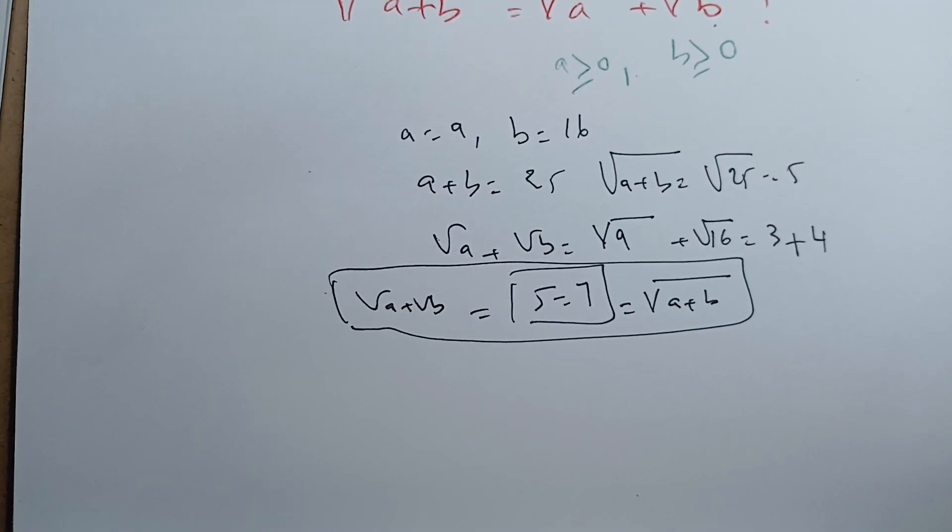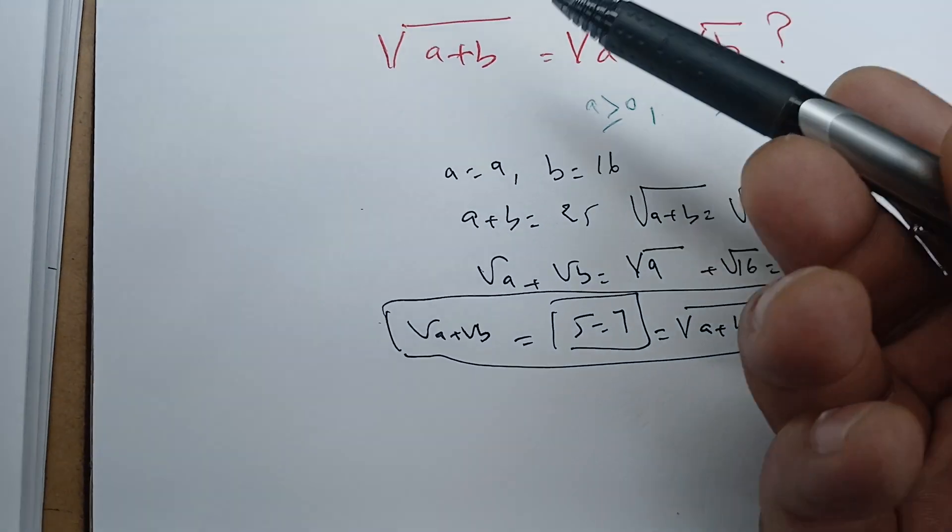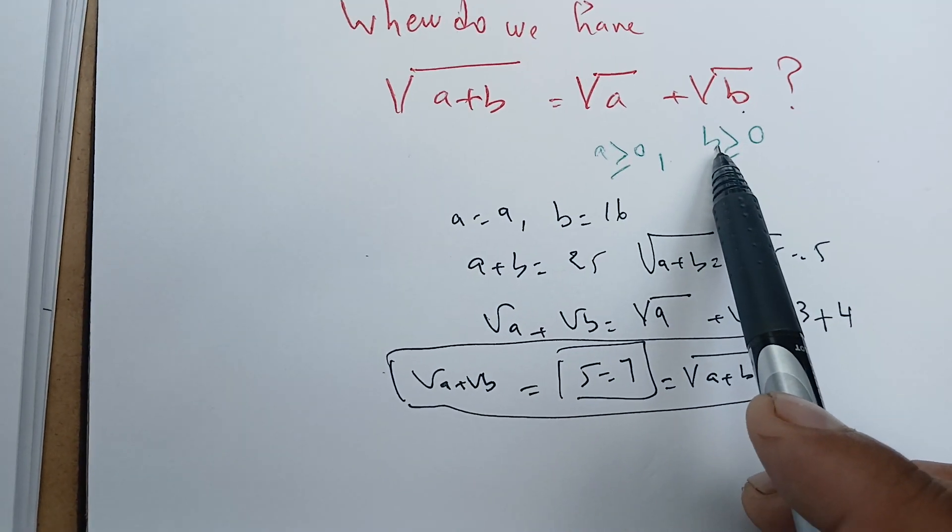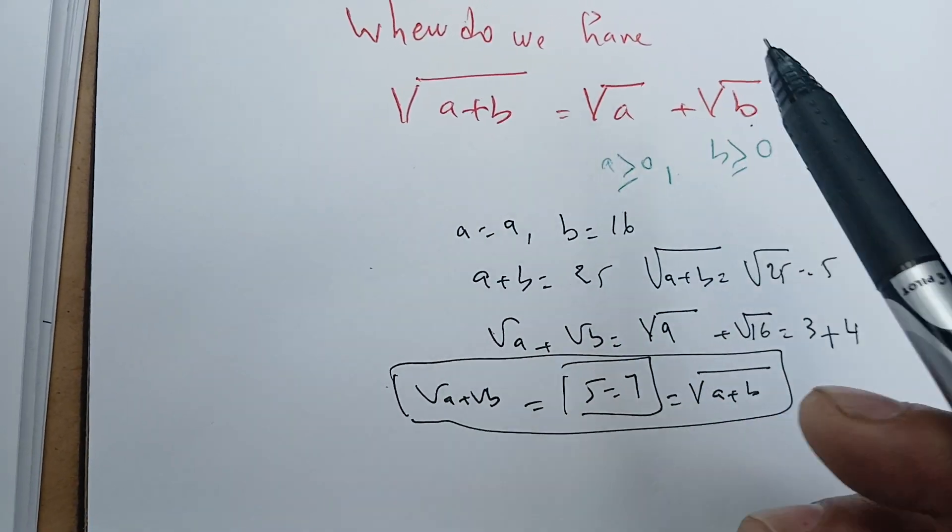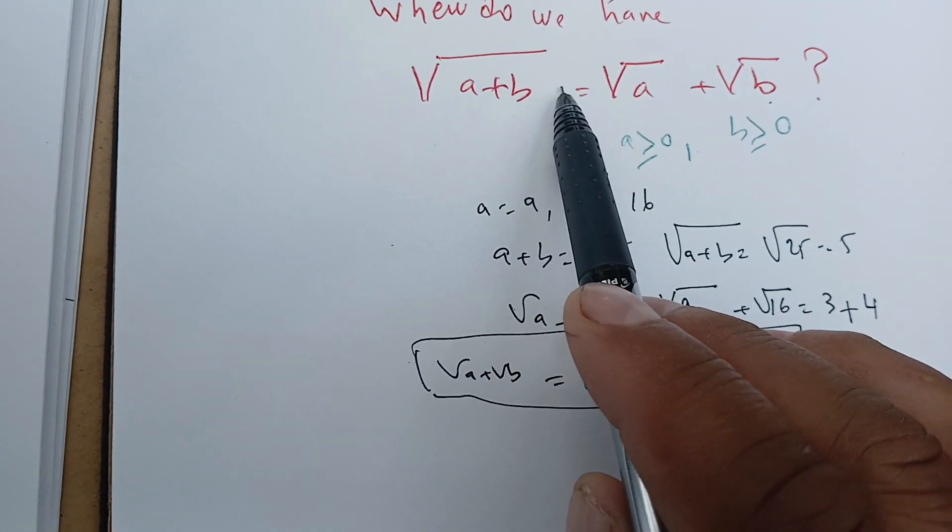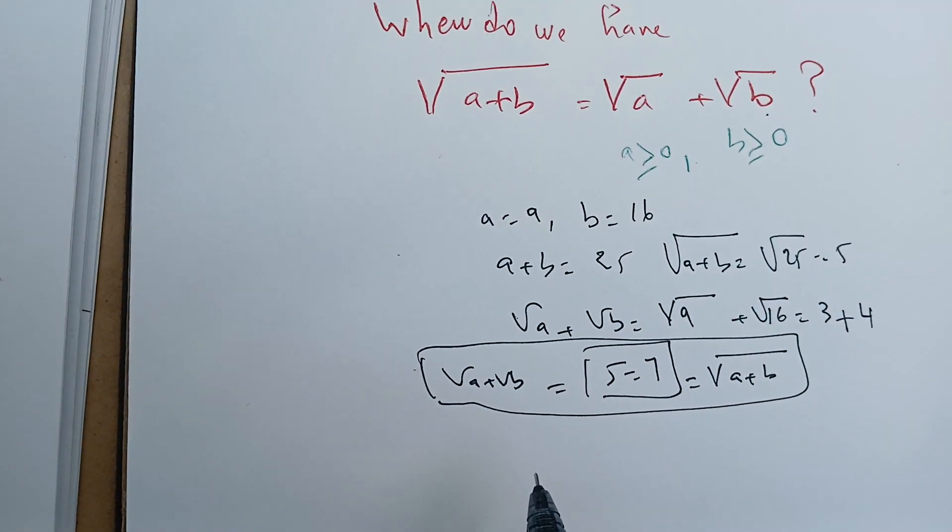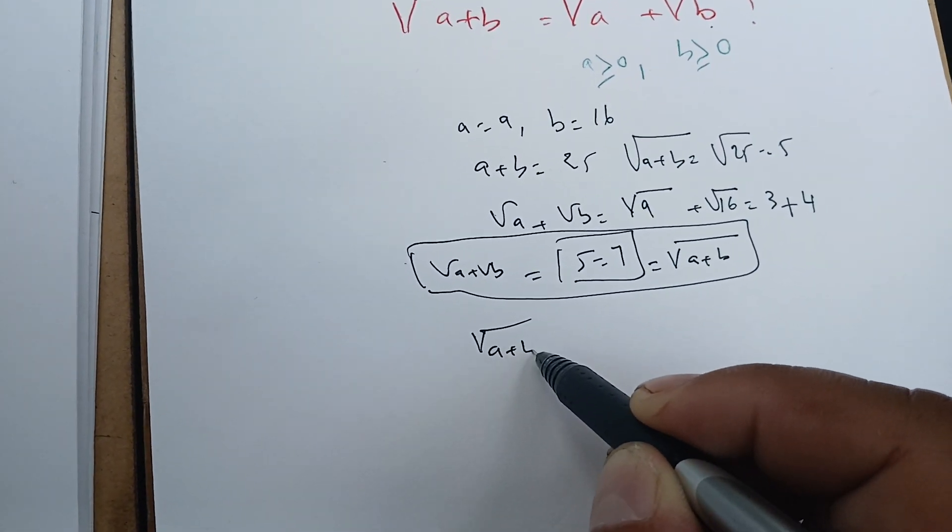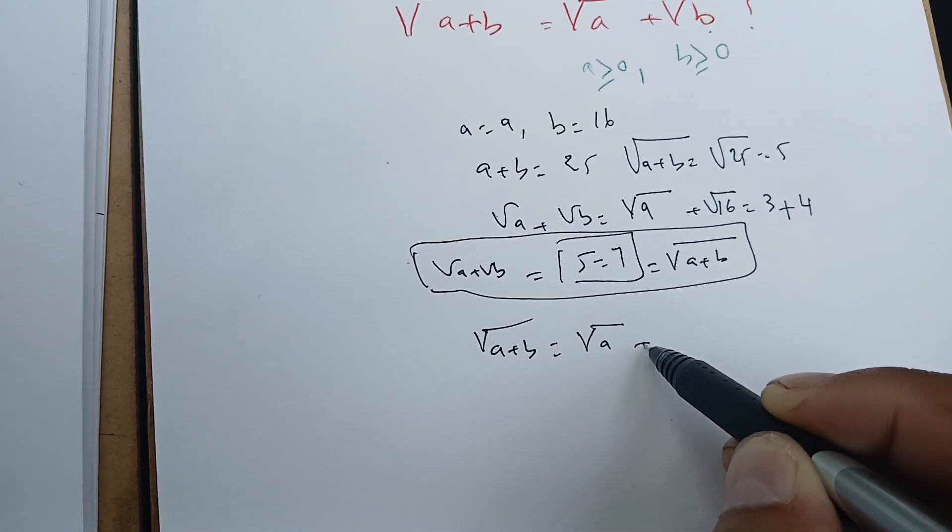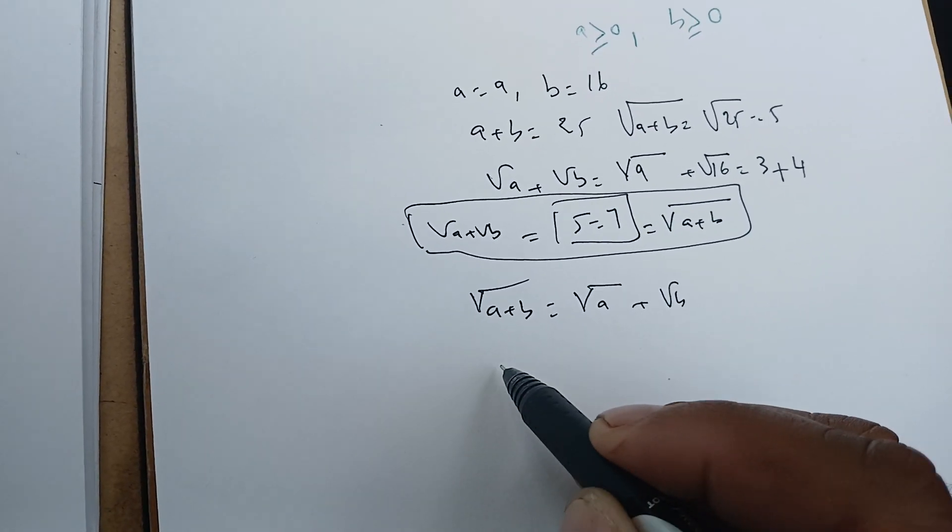To see if we can have this one, assume that we have this one given that a and b are defined in this manner. Assume that we have this result. Since both of them are positive, everything here is positive, we can square everything. So here we have the square root of a equals square root of a plus square root of b, so let's square everything.